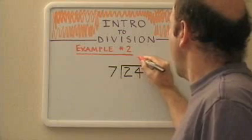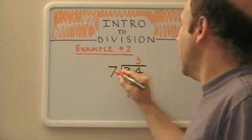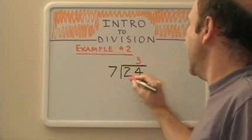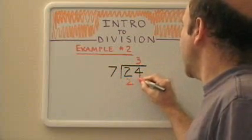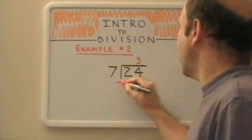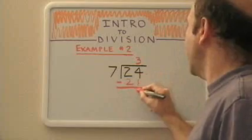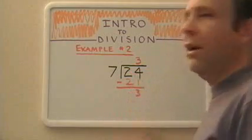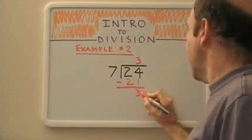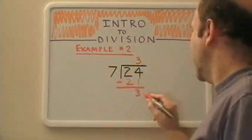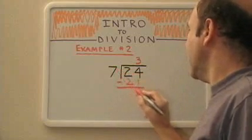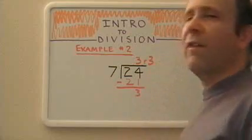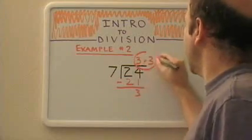So we put our 3 over the 4 in the 24, because we're using this entire number. We multiply 7 times 3 is 21. We put that directly under the 24. Subtract. 4 minus 1 is 3. 2 minus 2 is 0. We ask ourselves, is this number here less than 7? If this number is less than 7, which it is because it's 3, that becomes our remainder. So our final answer is 3 remainder 3.